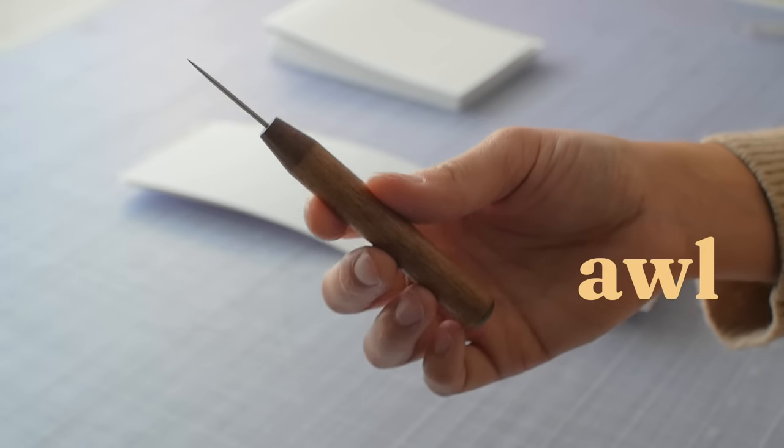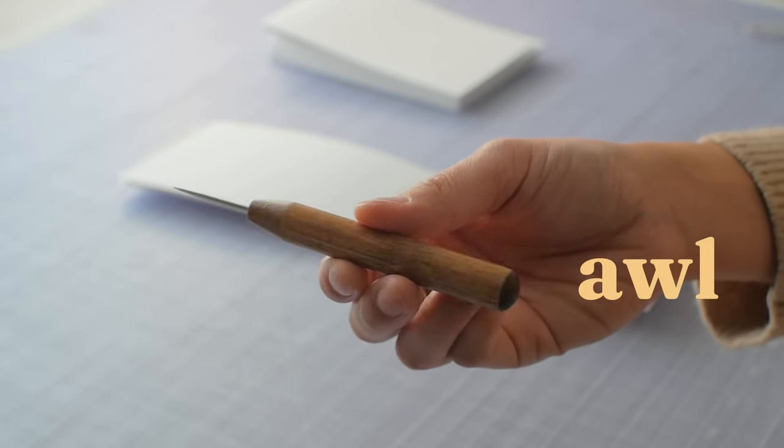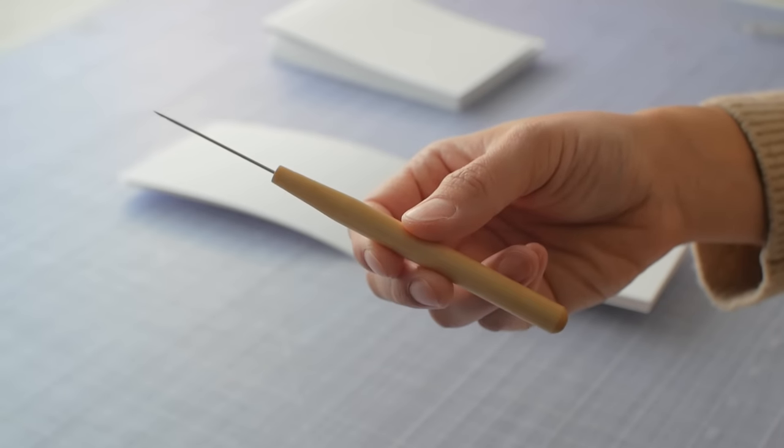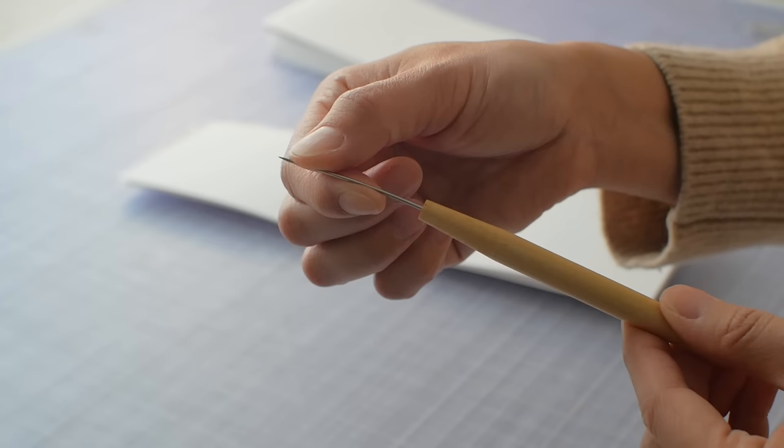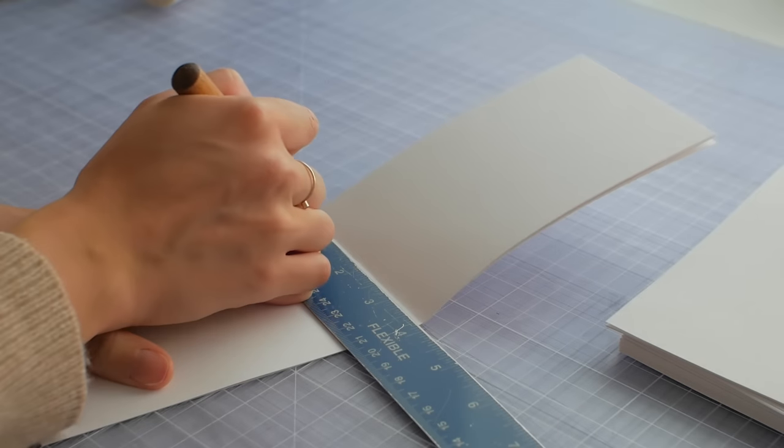This is an awl, like owl but with an A. It's used to make holes for sewing. This is a light duty awl. I don't use it much for making holes because it's not as strong but you'll see me using it later. I'm preparing holes for the French link stitch.